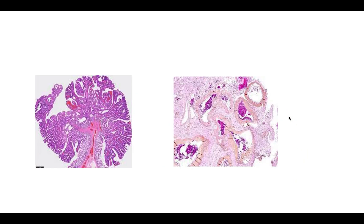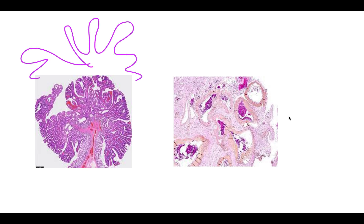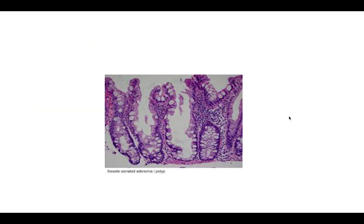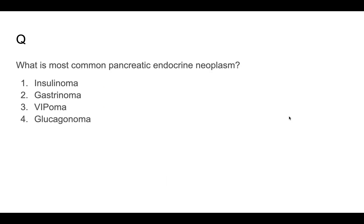The answer is juvenile polyp. Villous adenoma shows many villus-like structures. AV malformation shows thick blood vessels with RBCs inside. Serrated adenoma has serrations and is a mucin-rich tumor. In this case, the diagnosis is juvenile polyp.